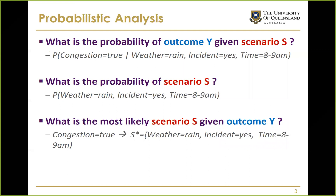What is the probability of having congestion given a particular scenario? The scenario means a combination of uncertainty factors such as weather condition, incident occurrence, time of day, and so on. The second question is: what is the probability of the scenario itself — for example, the probability of rain combined with an incident during a particular time interval?